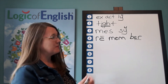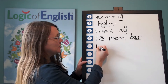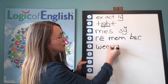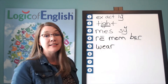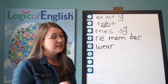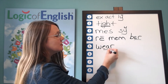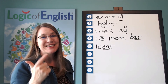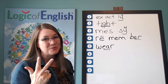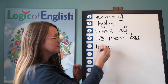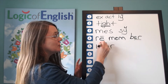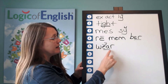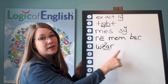Excellent. Now help me to write it. Wuh, A, er. And how will we mark it? We'll underline the A. What sound of E-A-A do we hear in wear? The third. Let's read it. Wuh, A, er. Wear.